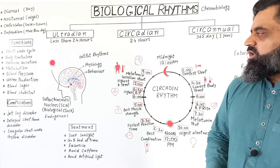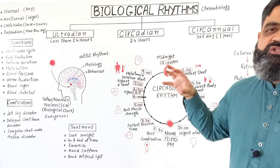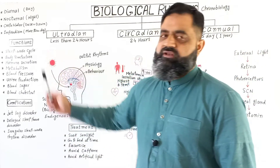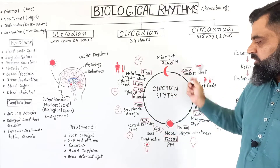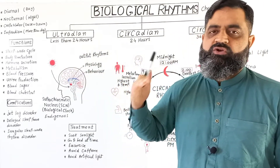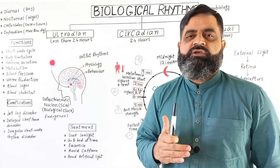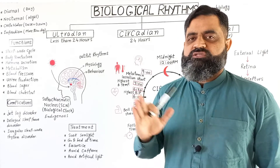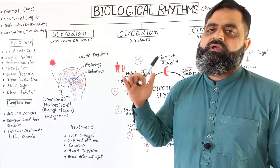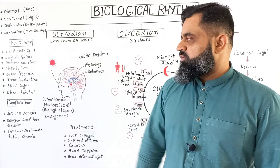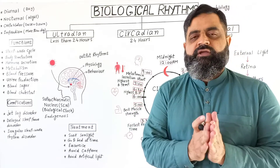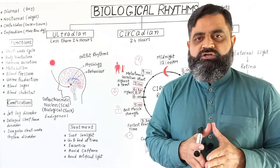Biological rhythms, especially circadian rhythms, play important roles in living organisms. They regulate the sleep-wake cycle, maintain body temperature at different times of day and night, and control hormone secretion — with different hormones secreted at different times. Metabolism is also controlled by these rhythms, as are blood pressure, urine production, blood sugar, and blood cholesterol, all maintained within a narrow range.